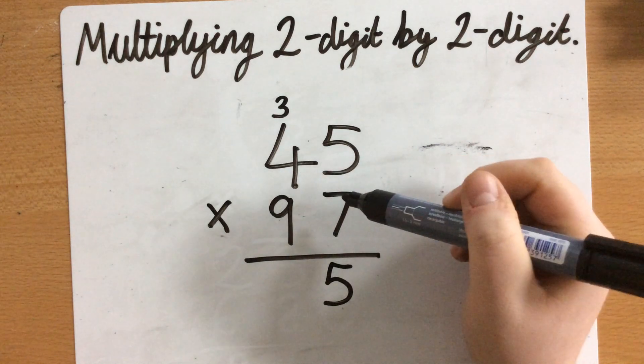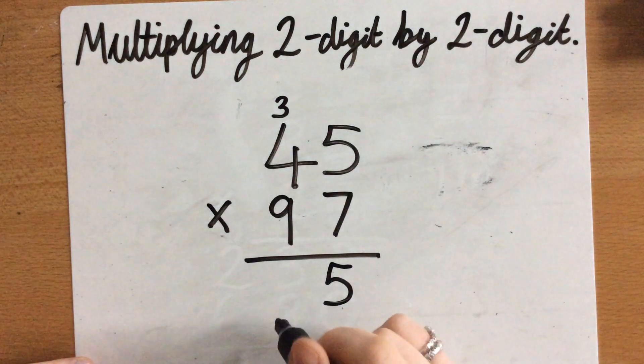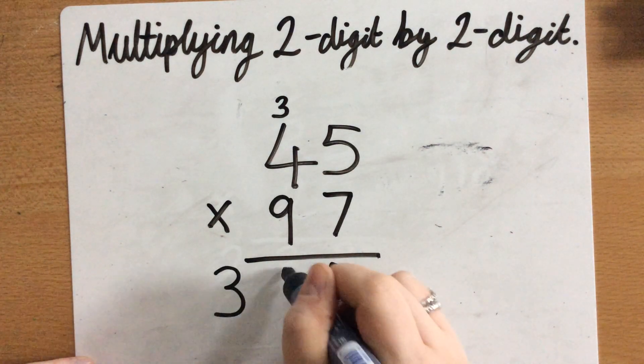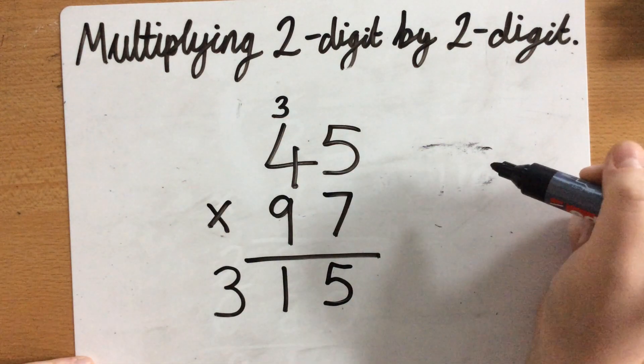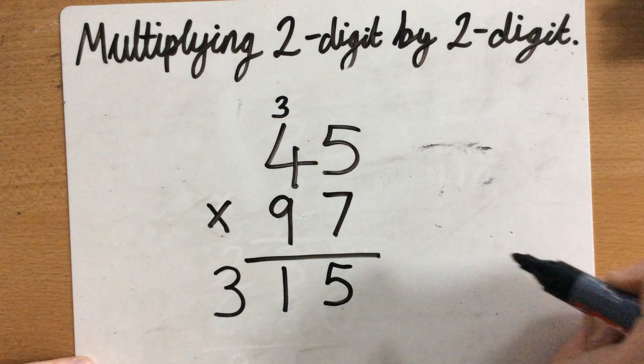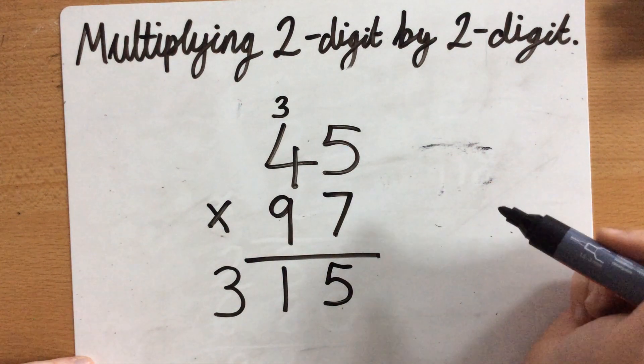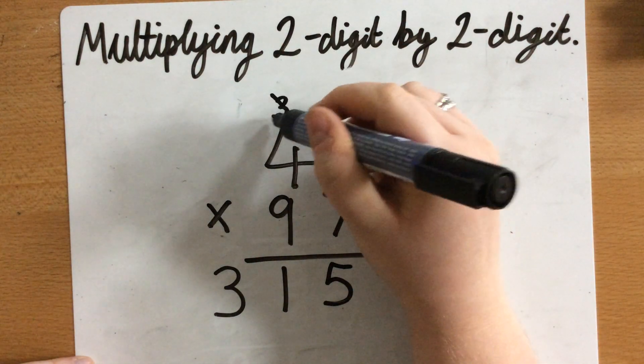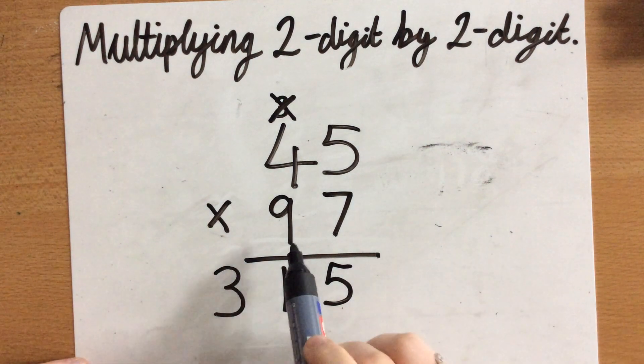7 times 5 is 35. Now, 7 times 4 is 28. Add on the 3 here that I need to makes it 31. I can just write 31 here, because I haven't got another column over here that I need to multiply or carry over. So, that's 7 times 5 and 7 times 4 done. So, I've already used this 3, so I'm going to cross it off before I move on to the next column.